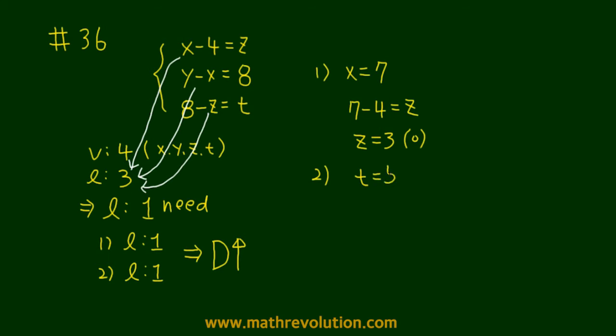What about question number 2? t is equal to 5, and 8 minus z is then 5. So z, again, is 3.